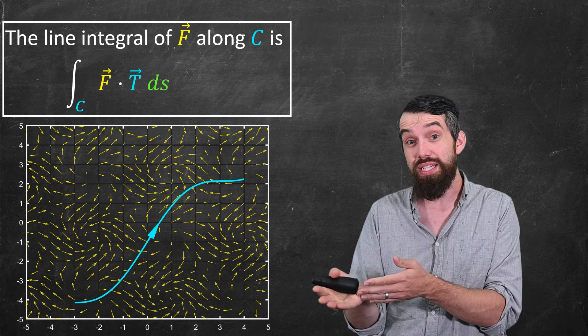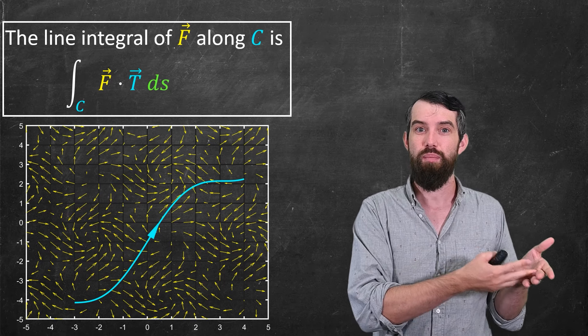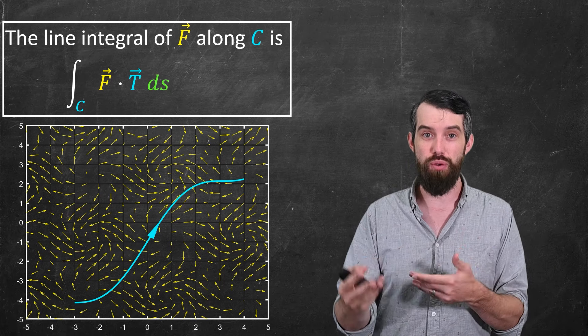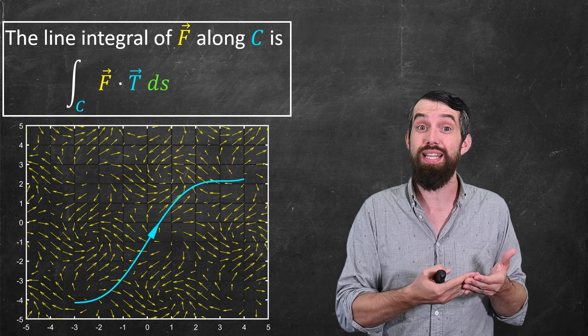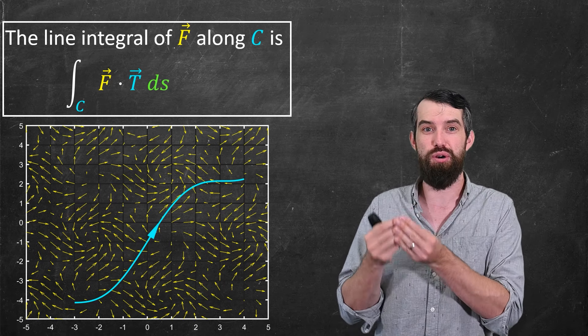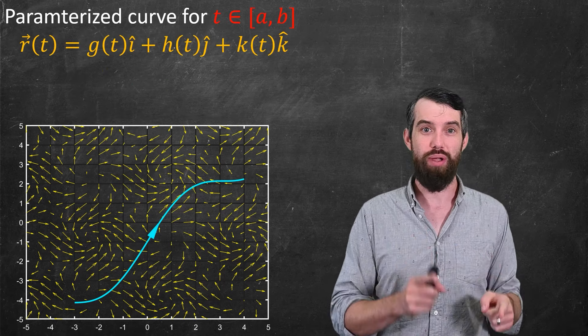This is a definition we can understand because we previously understood the concept of a line integral. But the question now is, how do we compute it? And as we've seen before, when it comes to computations, we want to see how can I parameterize a curve explicitly, and then rewrite this formula in terms of that parameterization.